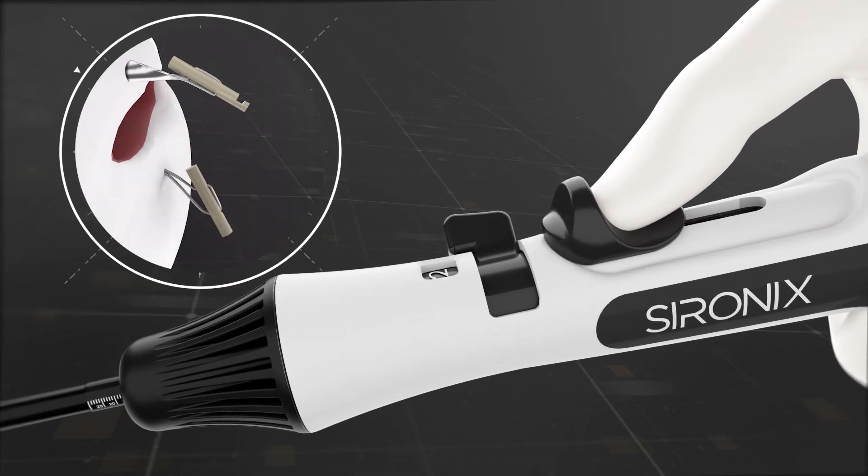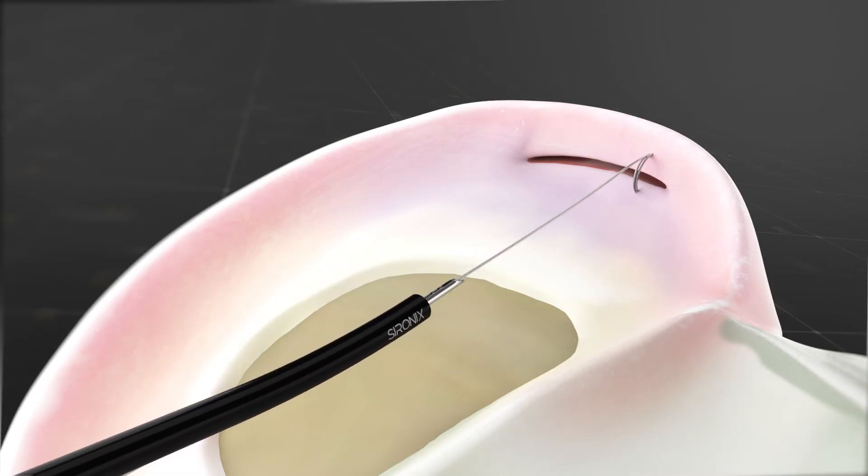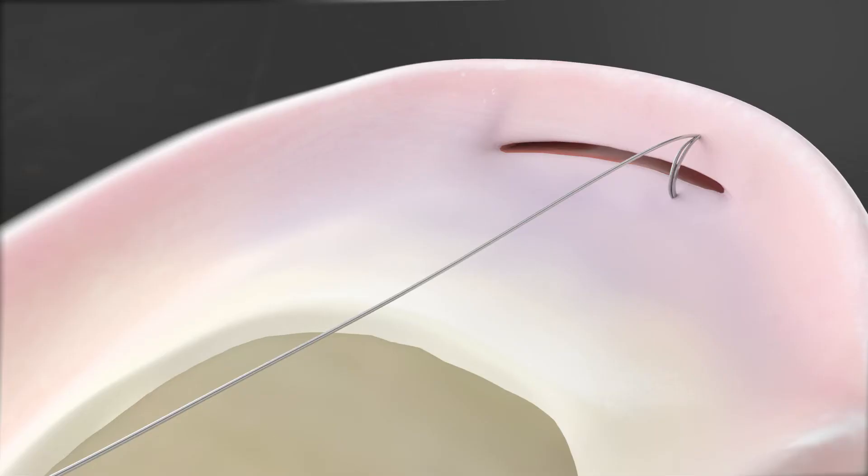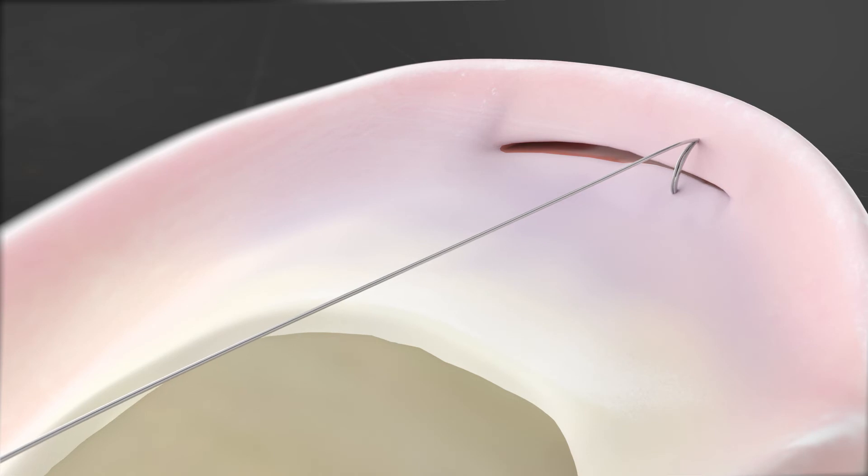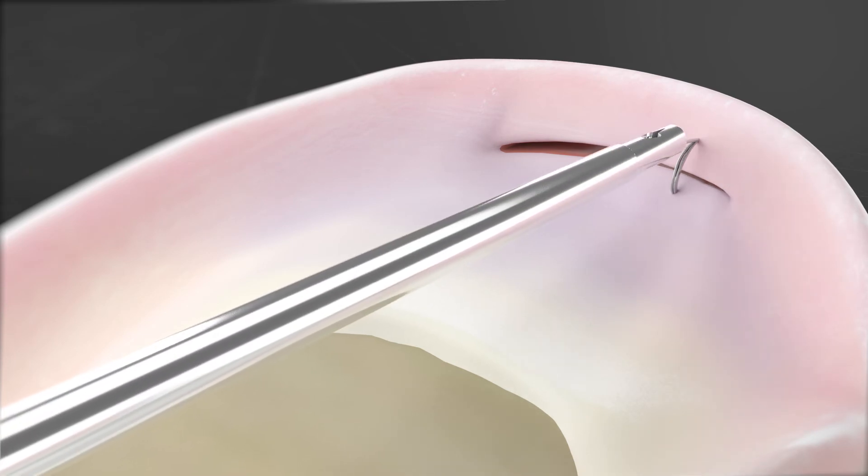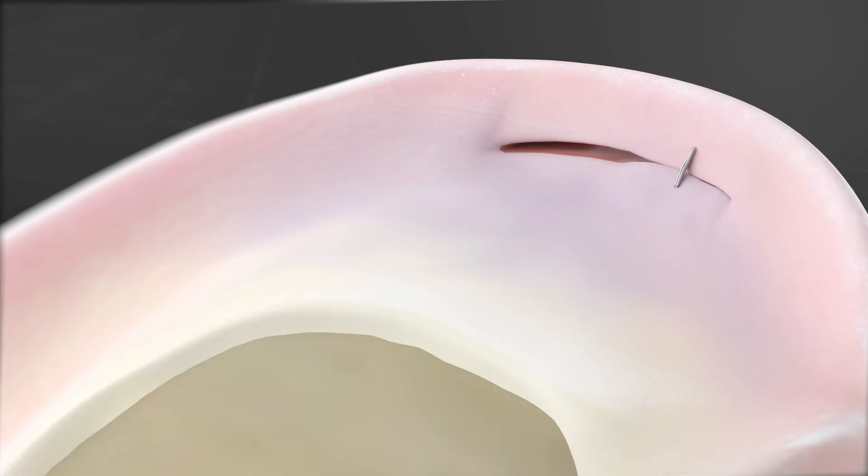Carefully retract the Ceronics ShuraStitch from the operating field. Use the Ceronics Nod Pusher to pull the suture tail with consistent tension until the desired approximation of meniscus is achieved. Then cut the remaining suture tail.